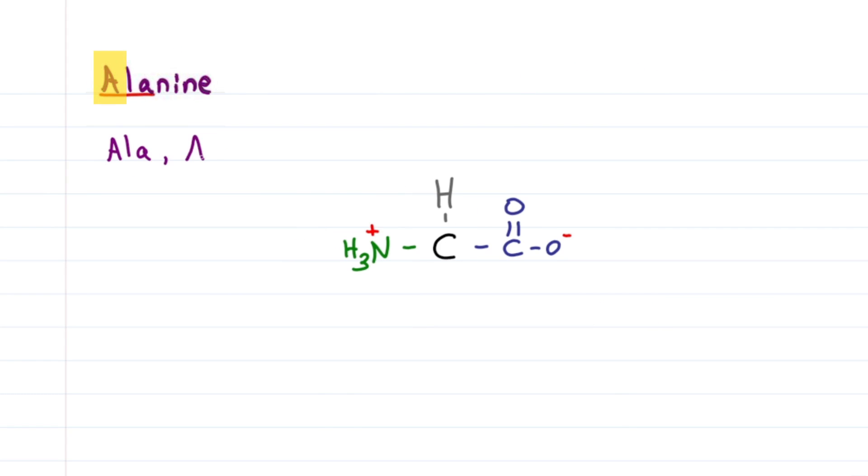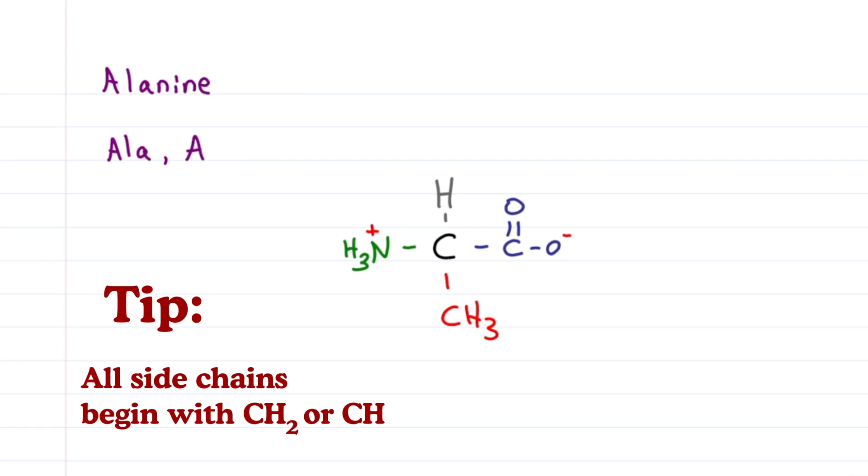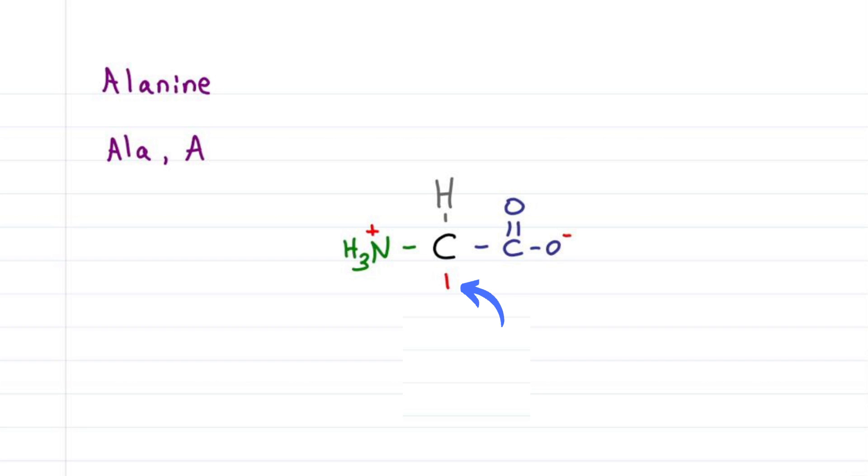Alanine is ALA first letter A, the first letter in the alphabet, and the smallest amino acid side chain, which is just the CH3. Quick tip for the upcoming amino acids, they all start with alanine. Turn the CH3 into a CH or CH2, allowing for additional groups, but they all start with this line. The straight chain makes it aliphatic, and having just carbon and hydrogen makes it hydrophobic.